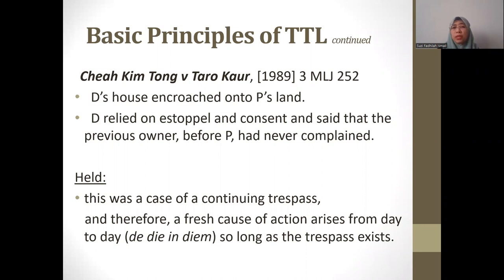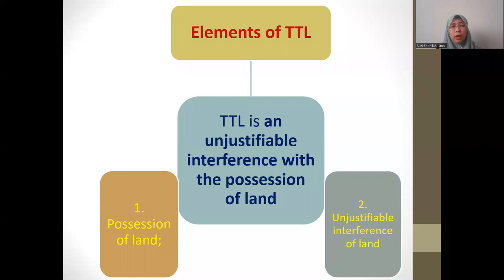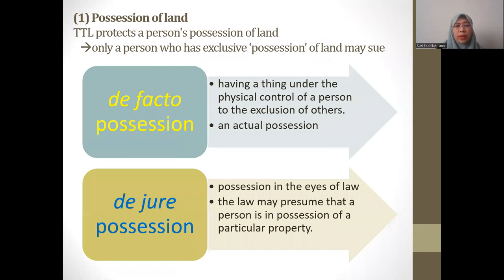Trespass to land has two elements to be proved, making it simpler than trespass to person. The elements are extracted from the definition itself. First, we must prove possession of land — because if there is no possession, there is no issue of trespass to land. Second, plaintiff needs to prove unjustifiable interference with the land, because if the interference is justified, there is no trespass to land.